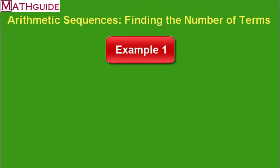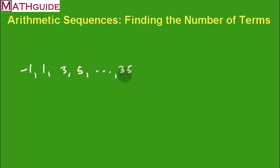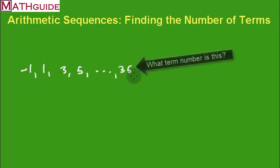Let's take a look at our first example. We have a sequence with four numbers, and here's another number — the last number. This sequence does not go on forever; it terminates at 35. We want to figure out what term number 35 is. This is our first term, second term, third term, fourth term — what term is 35?